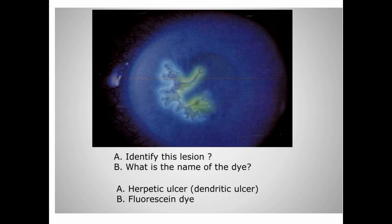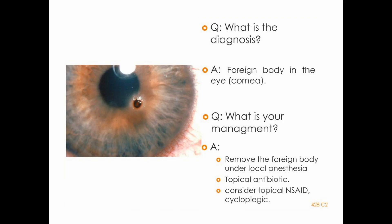This is a case of herpetic ulcer or dendritic ulcer. Which virus causes this? Herpes simplex virus. Which stain has been used? Fluorescein staining. What are the management steps? In active disease you will give antiviral medication — antiviral ointment, oral antiviral drugs — and topical steroids with artificial tears.